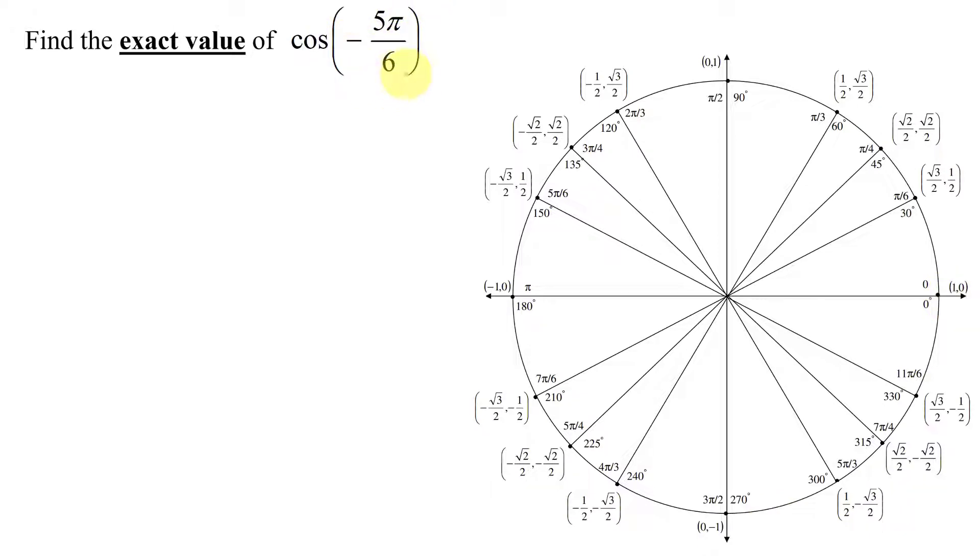But is the angle negative 5π over 6 on my unit circle? No, all the angles on the unit circle are positive angles. So there's two ways to do this problem. I'm going to show you both ways and then you can pick the method you prefer.